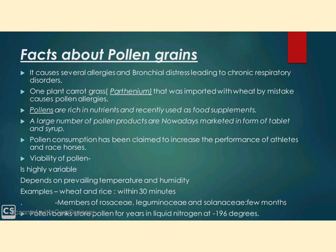Pollen grains have to land on the stigma before they lose viability. The period for which pollen grains remain viable is highly variable and depends to some extent on temperature and humidity. In some cereals such as wheat and rice, viability is lost within 30 minutes. But in some members of the families Rosaceae, Leguminaceae, and Solanaceae, they maintain viability for months. Pollen grains can also be stored for a number of species for years in liquid nitrogen at minus 196 degrees Celsius. These storehouses are known as pollen banks, similar to seed banks, and are used in crop breeding programs.